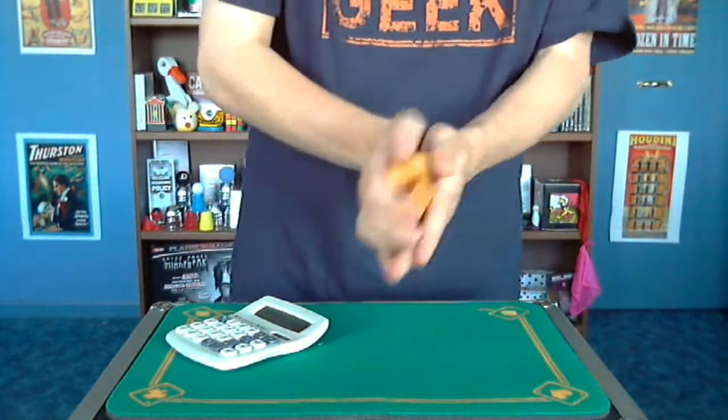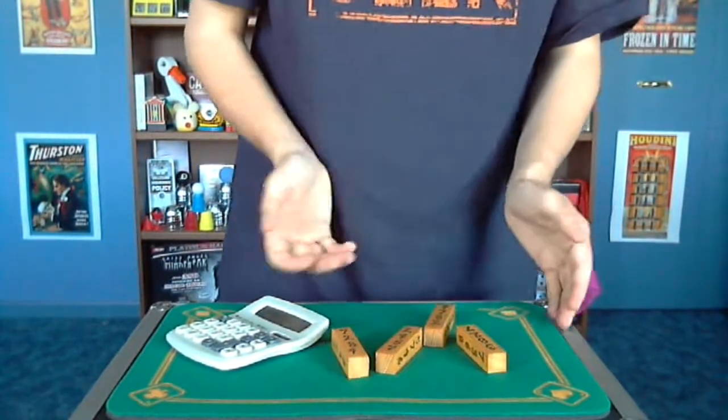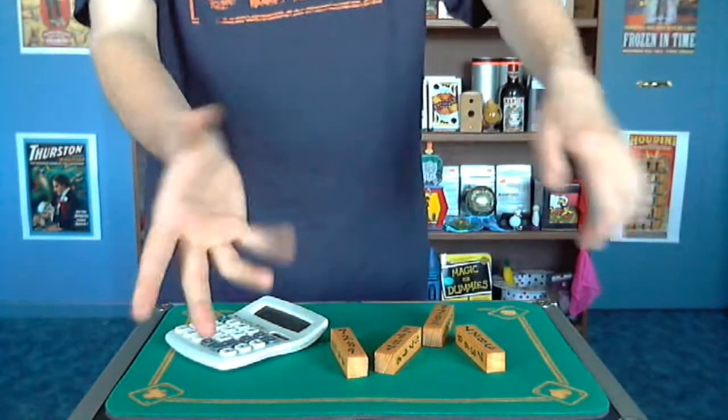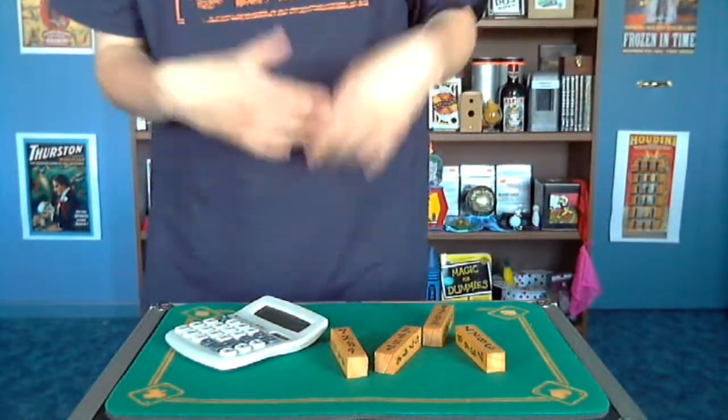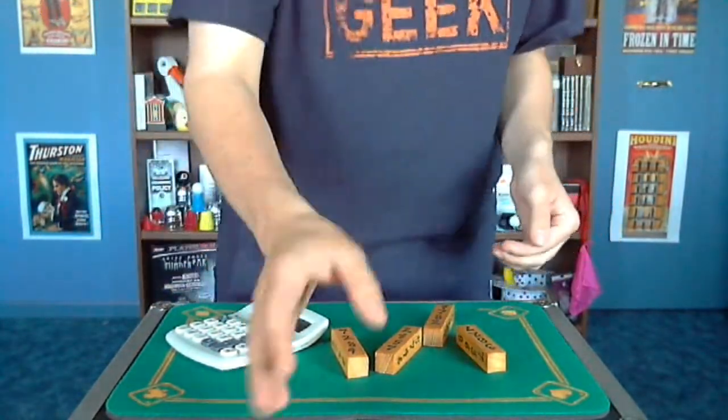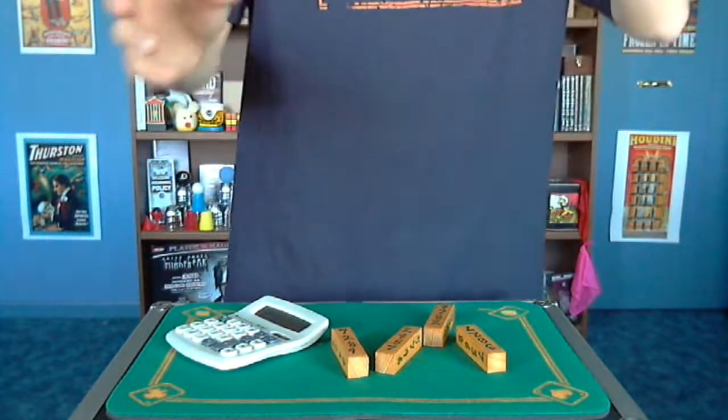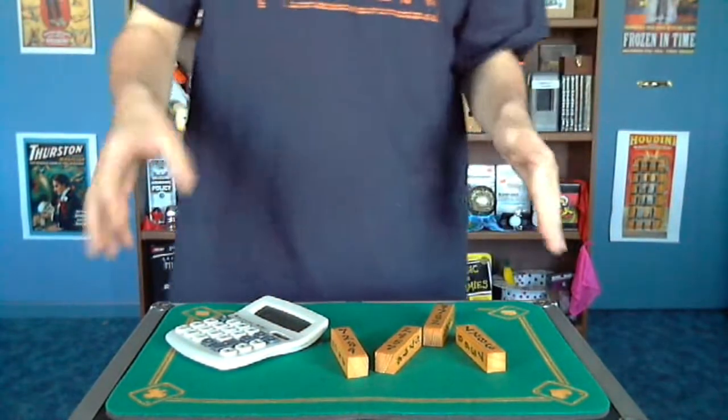What you do is you shake these up, you toss them on the table, you have a spectator choose one of the die, and they pick one of the sides to put face up. And then you're going to be able to tell them what their number is that they choose.